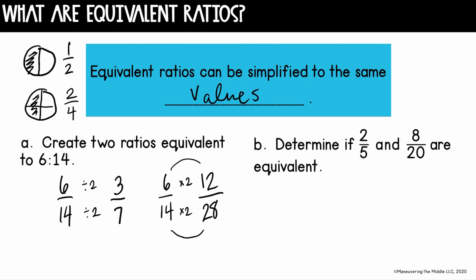We can check if ratios are equivalent by simplifying them. If I look at two to five and eight to 20 and want to know if they're equivalent — well, two to five is already in its simplest form because five is prime. But eight to 20 can be simplified: I can take out a four, giving me two as my numerator and five as my denominator. Now I can see that two to five and two to five are equivalent. So yes, these are equivalent.